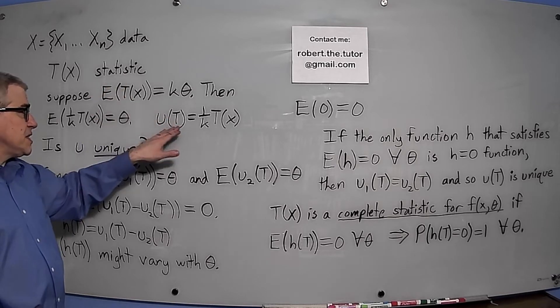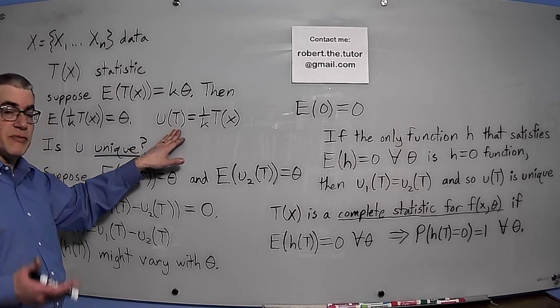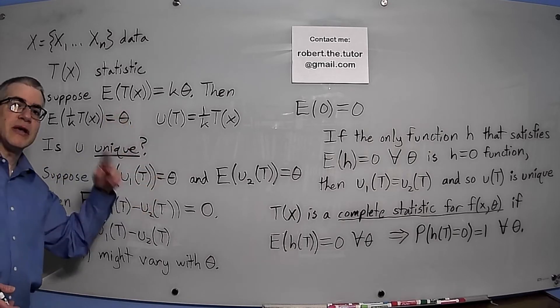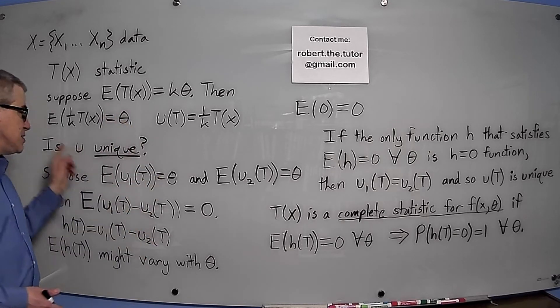So if T is a statistic, u(T) would be an unbiased statistic for θ. Here's the question that completeness is trying to answer: Is u unique?